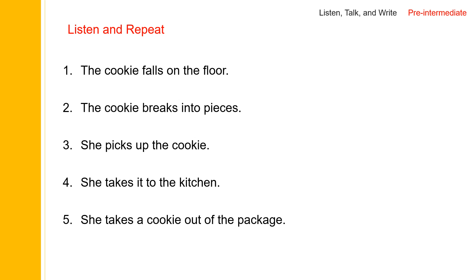Now, let us go back to sentence one. The cookie is a third person singular, so we need an S after FALL. You need to say FALLS. And then FALLS ON. The cookie falls on the floor.